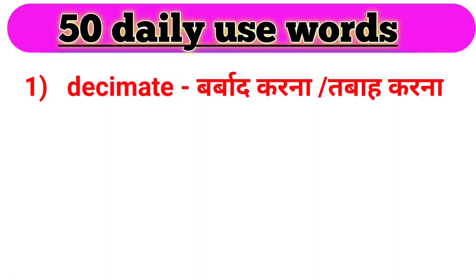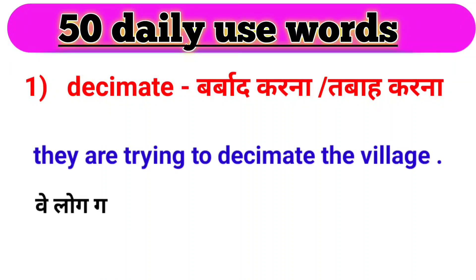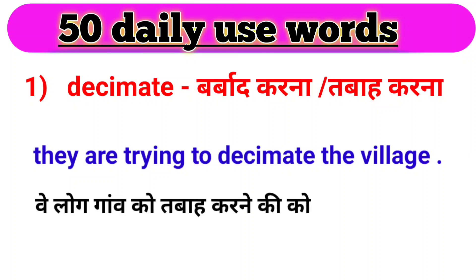First word, we have decimate. Decimate ka matlab hota hai barbaad karna ya tabaah karna. For example: They are trying to decimate the village. Wee loog gaao ko tabaah karne ki koshish kar rahe hain.